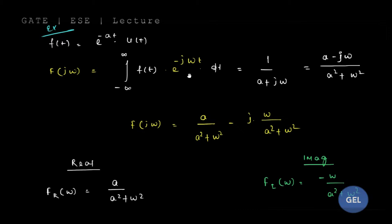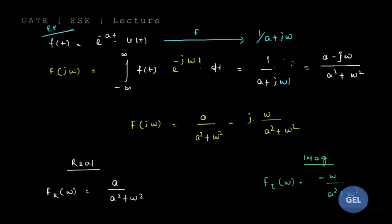That means the Fourier transform of this f(t) is nothing but 1/(a + jω). If you factorize this properly — multiplying by (a − jω)/(a − jω) — at the end you will get a function from which we can extract the real component and the imaginary component.